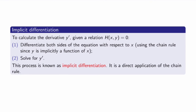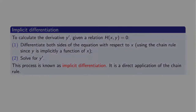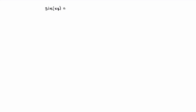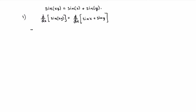This process is known as implicit differentiation, and it's just a direct application of the chain rule. Let's work through an example. Consider the relation sin(xy) = sin(x) + sin(y). This defines a curve in the xy-plane, and we're interested in calculating y-prime — the slope of the tangent line. Note that you cannot solve here for y as an explicit function of x, so you need to use implicit differentiation.